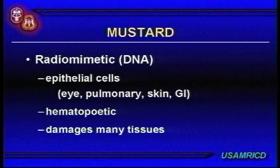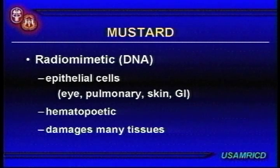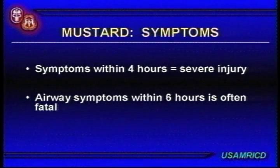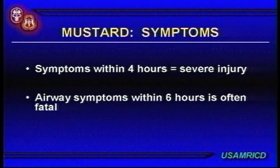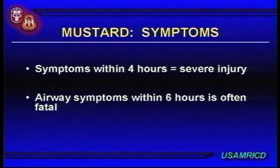Mustard has been called radiomimetic because it acts primarily at the DNA of rapidly dividing epithelial cells — bone marrow, GI tract. When symptoms come on within four hours, you have a severe injury, especially if it involves the lungs or a large surface area. If airway symptoms are coming on within six hours, it is often fatal.